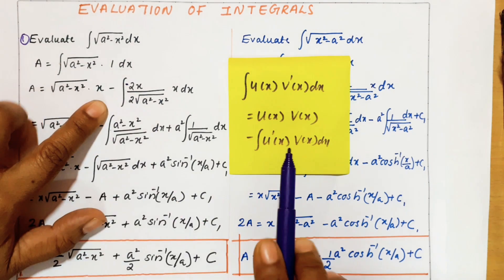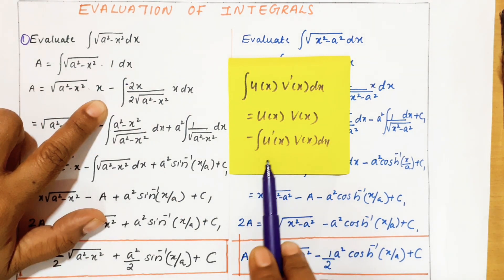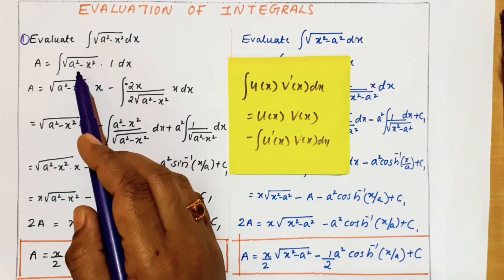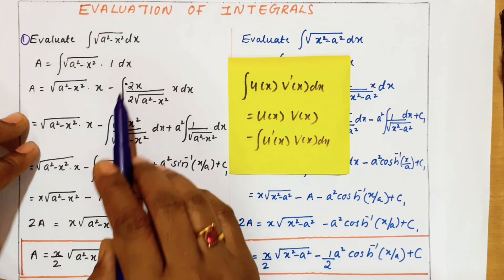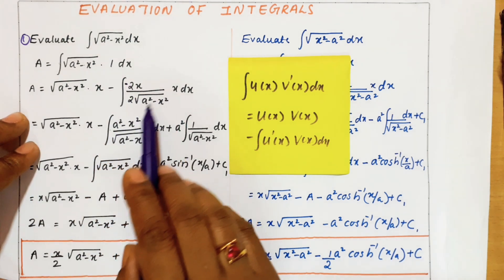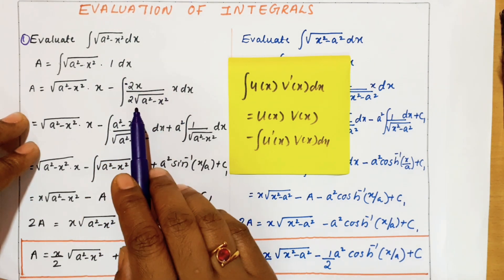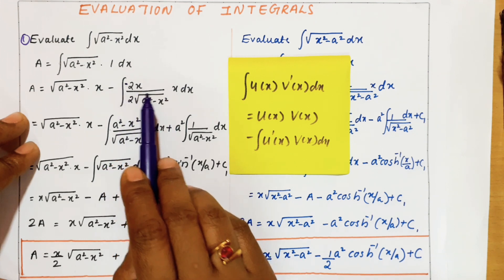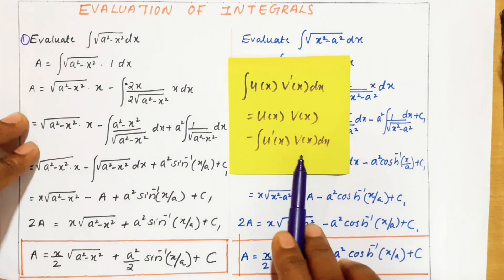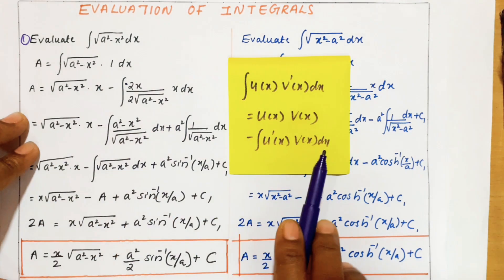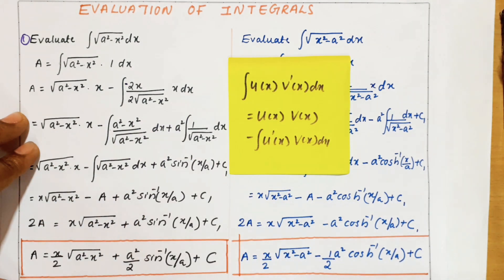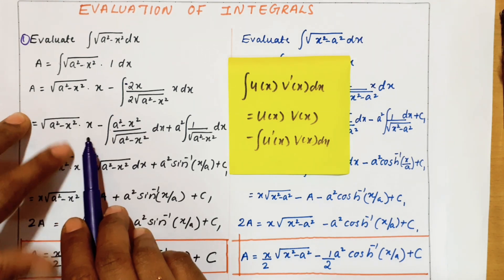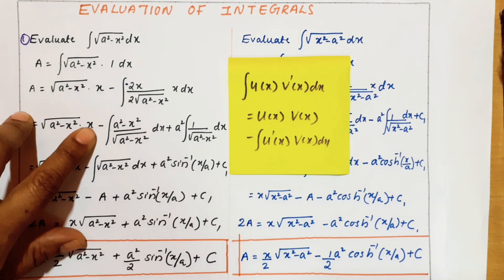What will be the second term? Minus u'(x): the derivative of √(a² - x²) is 1/(2√(a² - x²)) times the differential of (a² - x²) which is -2x, into v(x), which is x dx. So this I can write as √(a² - x²) · x, so far there is no problem.